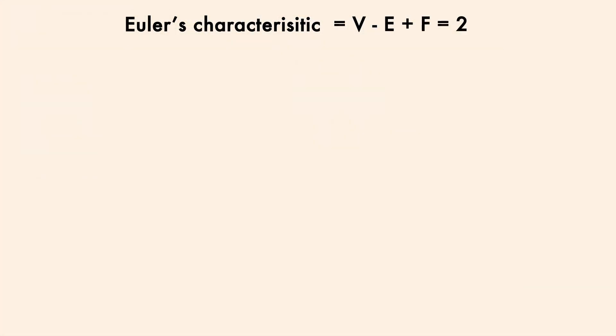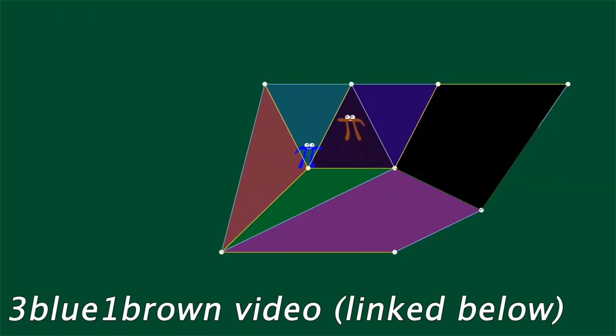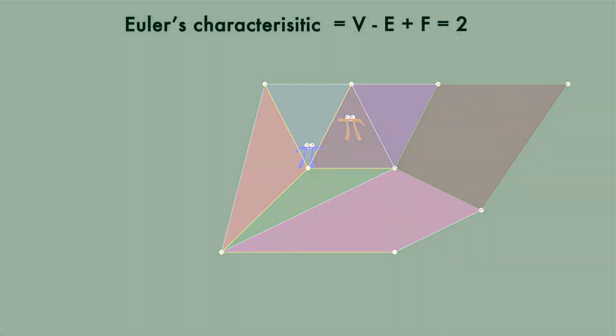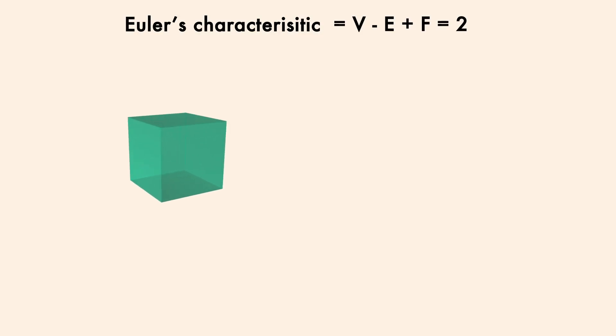This is the one thing I won't prove, but 3Blue1Brown has a really cool explanation that I'll link below. So for now, at least just take my word for it. But let's first look at a cube. You'll notice it has 12 edges, 4 on top, 4 in the middle, and 4 on the bottom.